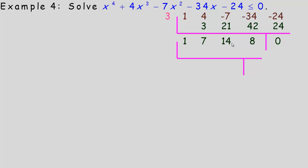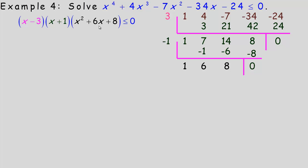Negative 1 works for the cubic: bring 1 down; negative 1 times 1 is negative 1; add to 7 to get 6; 6 times negative 1 is negative 6; add to 14 to get 8; 8 times negative 1 is negative 8; remainder 0. So x plus 1 is a factor, leaving x squared plus 6x plus 8. That factors into x plus 2 and x plus 4, since 2 and 4 add to 6 and multiply to 8.